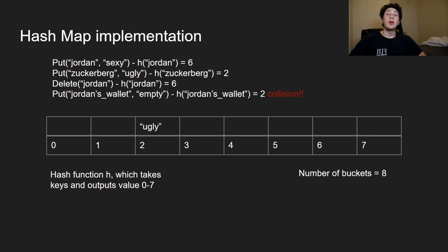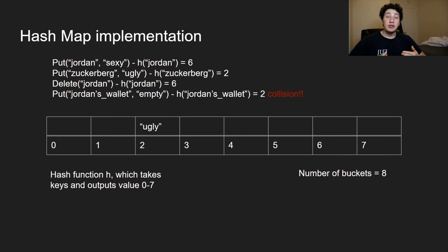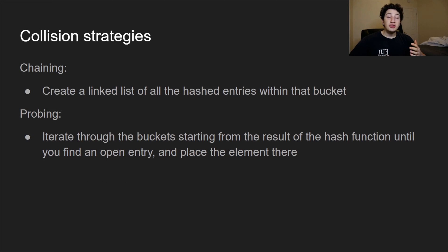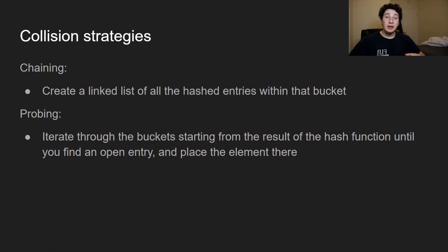Let's imagine we're adding another key to our hash map. The issue is that the hash of this new key is the same as the hash of an existing key — it also maps to index two. This is called a collision, where we need to differentiate between the two values and store them both. There are a couple of ways to handle this, known as collision strategies. The first is chaining, where you create a linked list of all entries in a bucket. The second is probing, where once a key's target slot is occupied, you keep moving through the hash map until you find an empty slot.